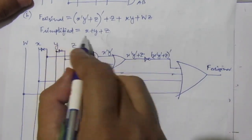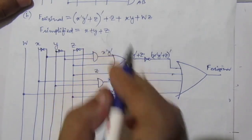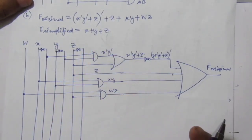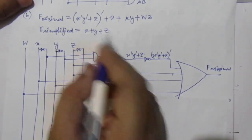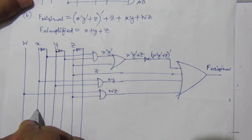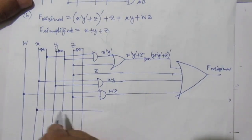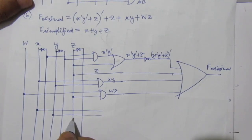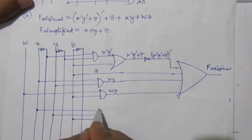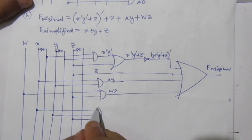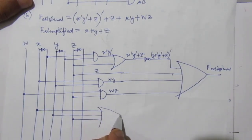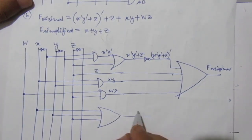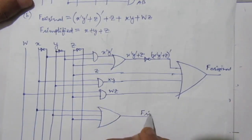Then for f simplified, we have x plus y plus z. Take a line from x, another from y, and the third from z. Use an OR gate because they are a summation. So this is f simplified. This is the part b solution.